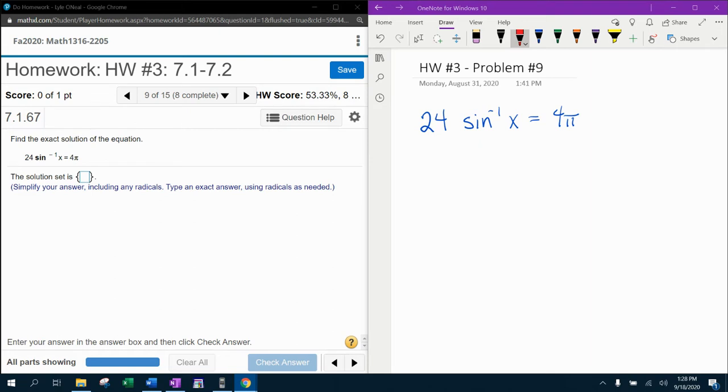So the first thing I'm going to need to do to isolate the variable is get rid of this coefficient. I'm going to need to divide both sides by 24.